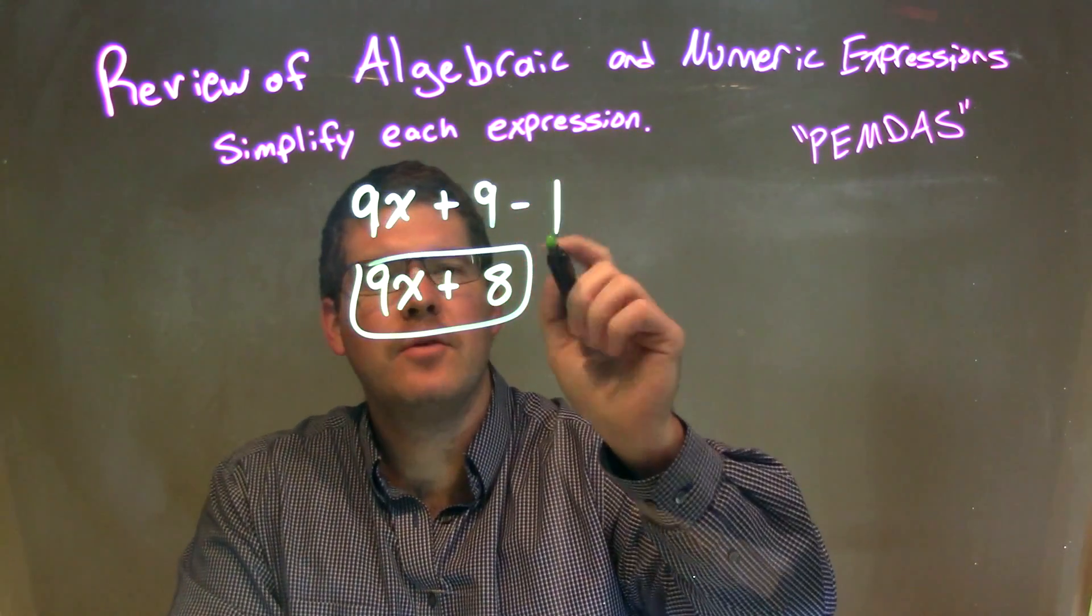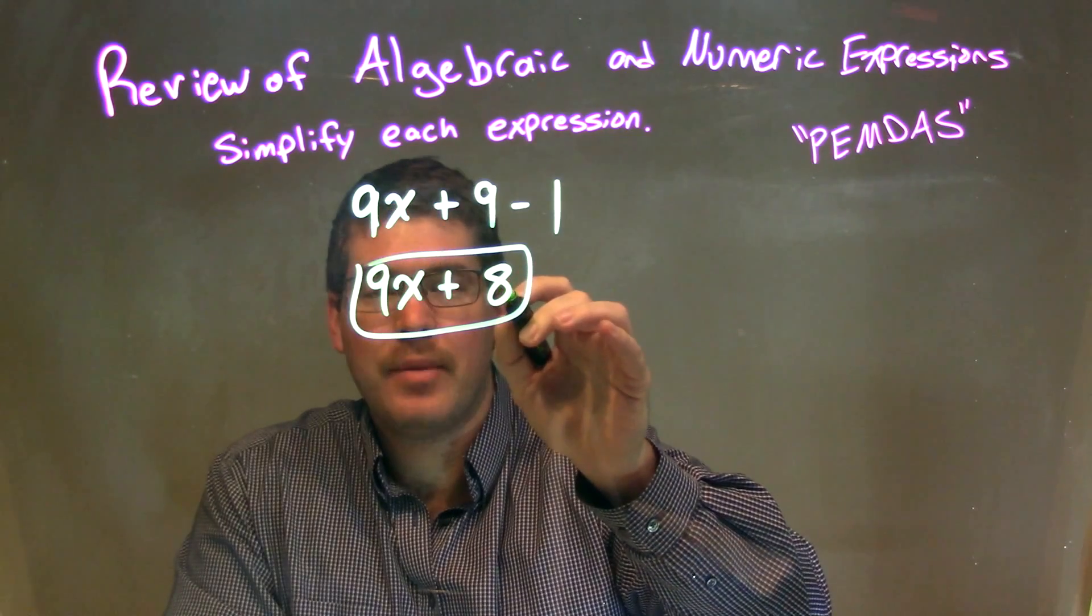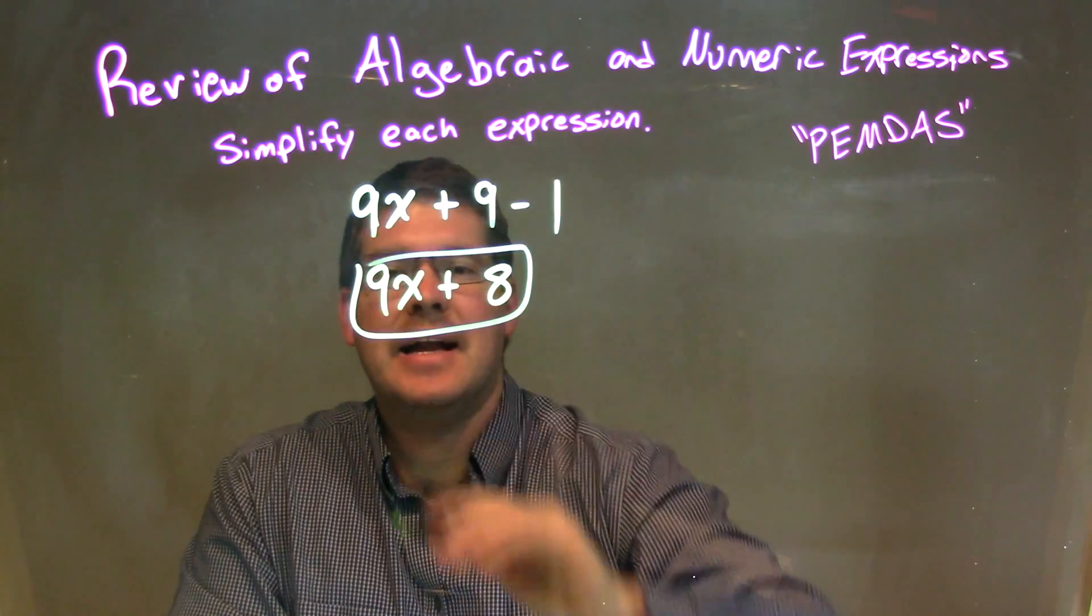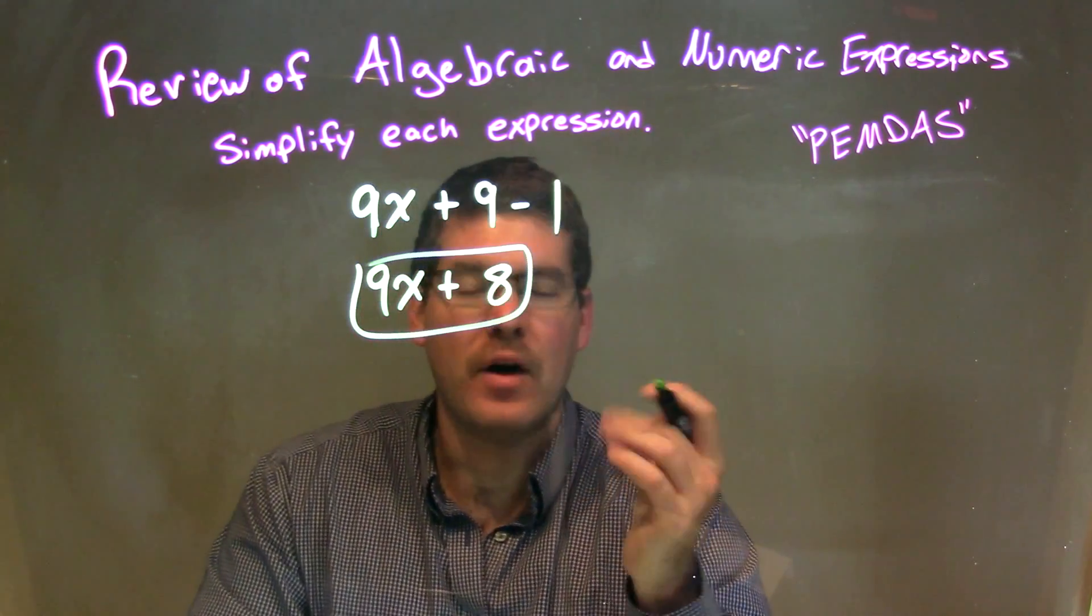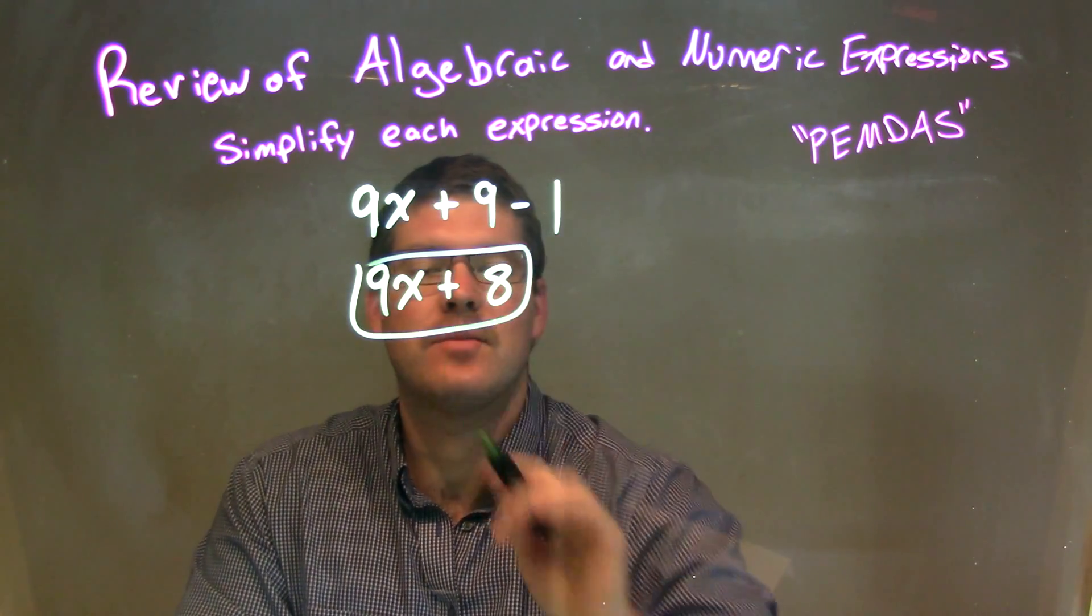So I combined those together, 9 minus 1, which gives me 8, a positive 8. I brought down my 9x here. And so again, our final answer is just 9x plus 8.